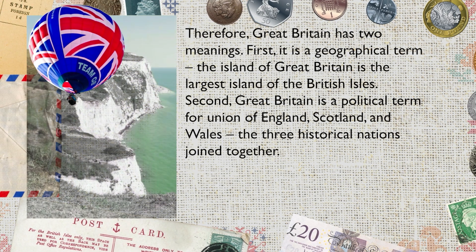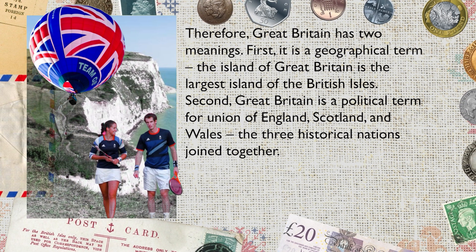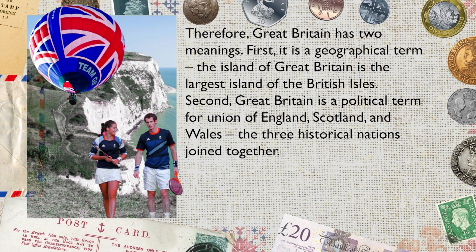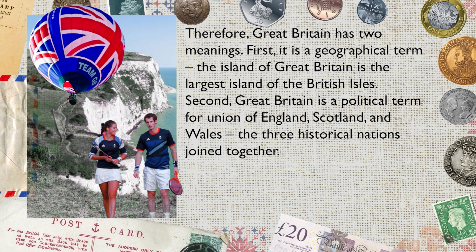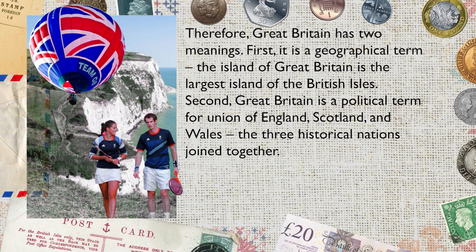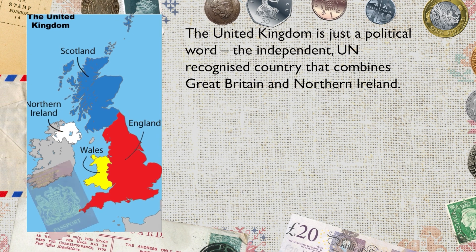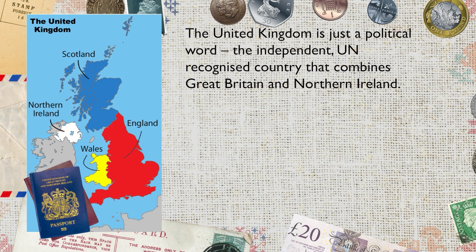Therefore, Great Britain has two meanings. First, it is a geographical term — the island of Great Britain is the largest island of the British Isles. Second, Great Britain is a political term for the union of England, Scotland and Wales, the three historical nations joined together. The United Kingdom is just a political word — it is the independent, UN-recognised country that combines Great Britain and Northern Ireland.